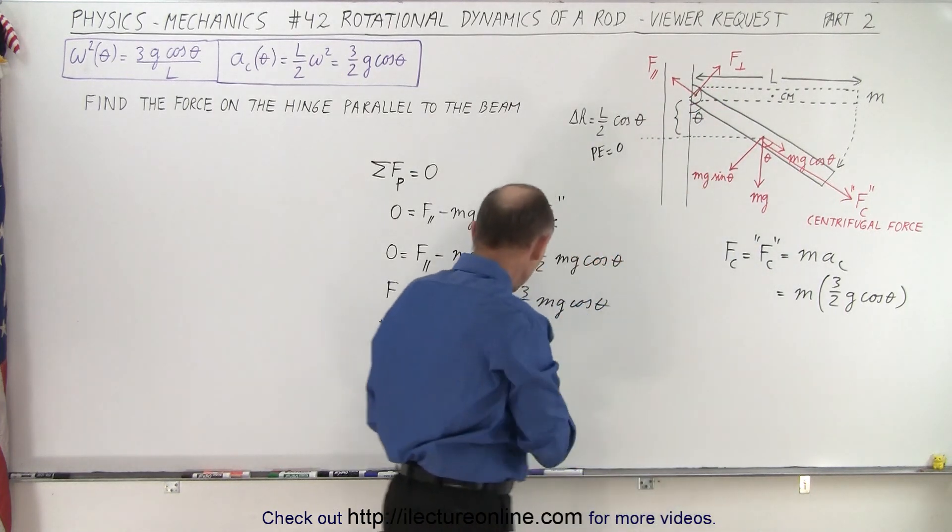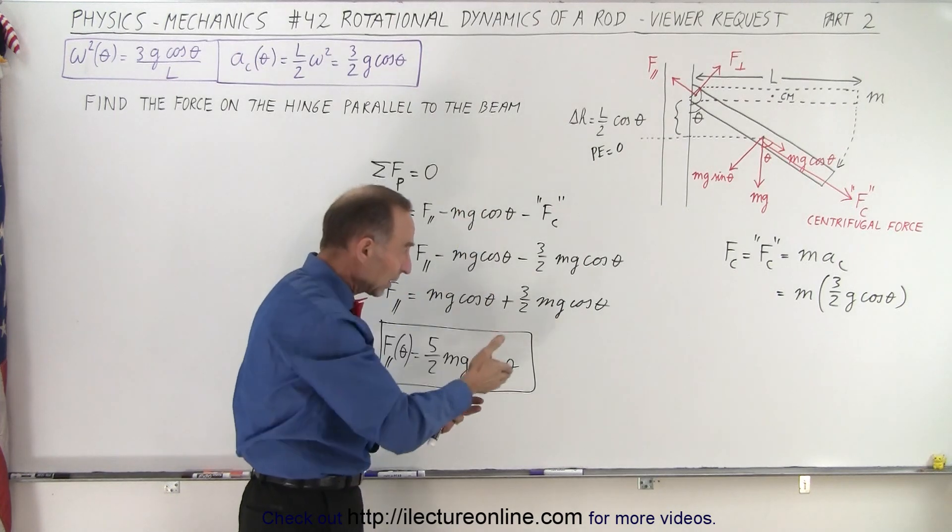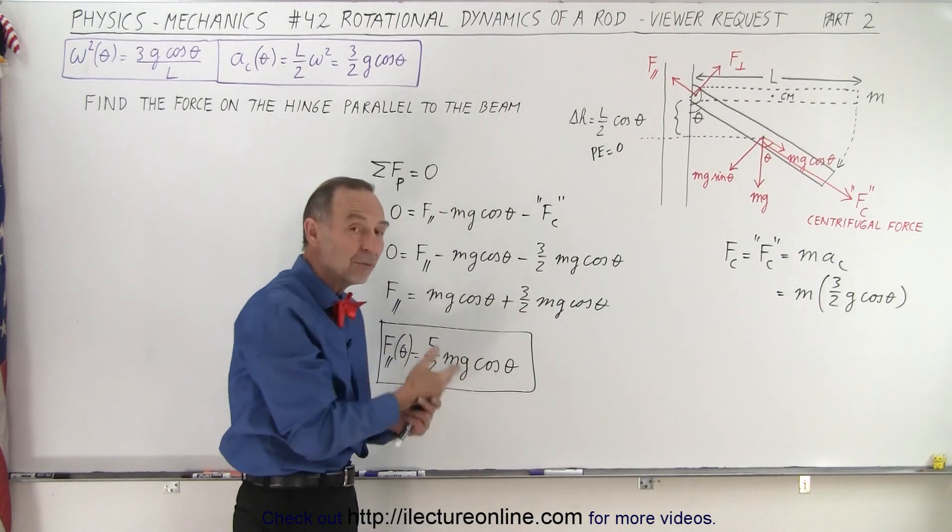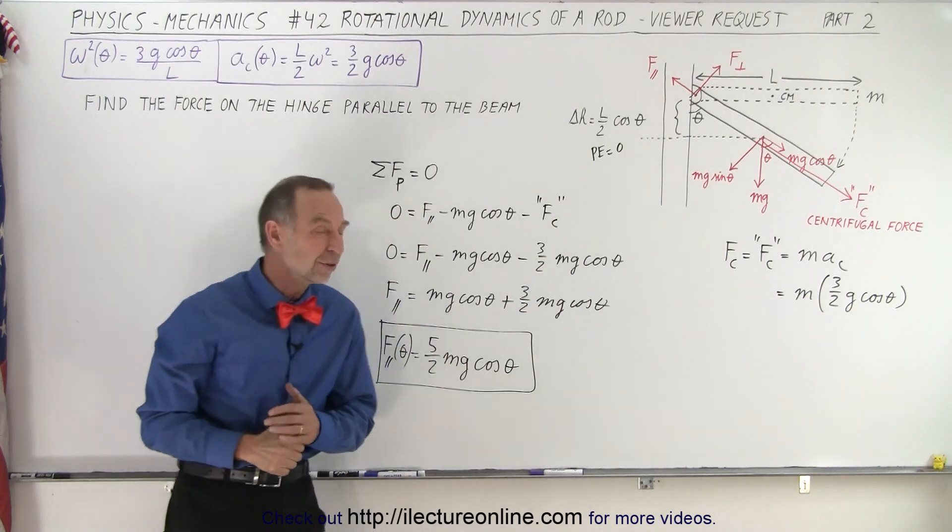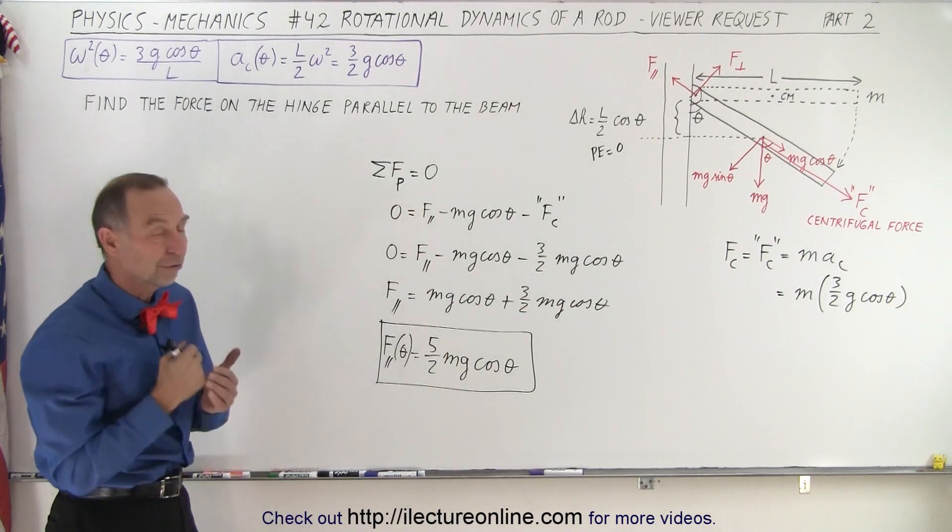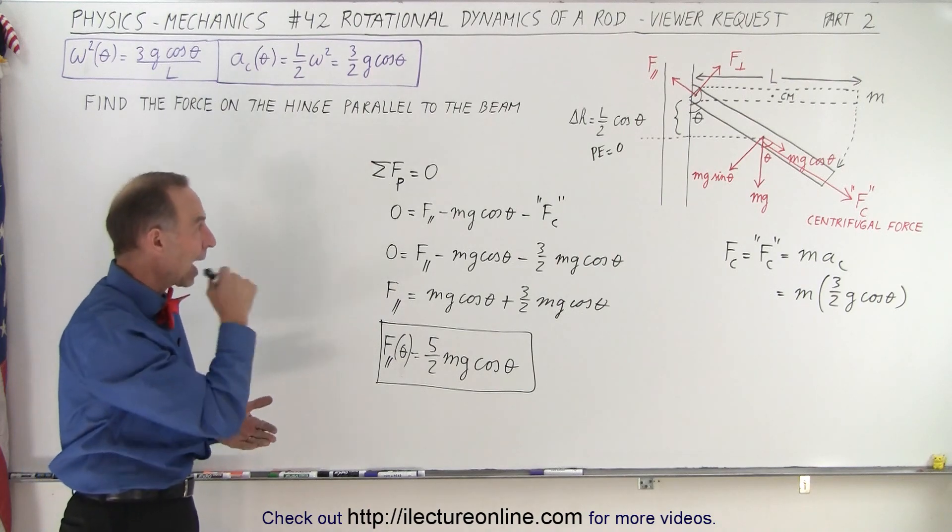So mg cosine theta, or mg, is part of the weight of the beam, and another three halves mg is due to the centripetal motion. So that then makes it look reasonable, and that's how you calculate the force parallel to the beam on the pin.